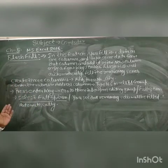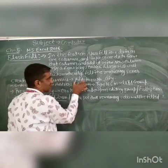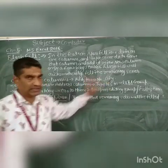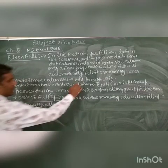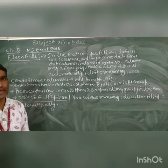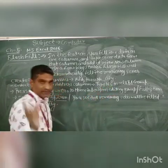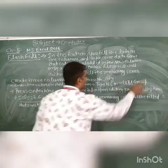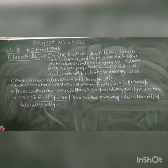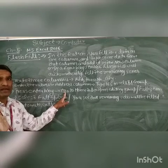To understand the Flash Fill method, first create three columns. Column one is Address, column two is House Number, and column three is Safety. Enter the values in the Address column. Then, as per the book example, type 166 in cell B1 and press Enter.